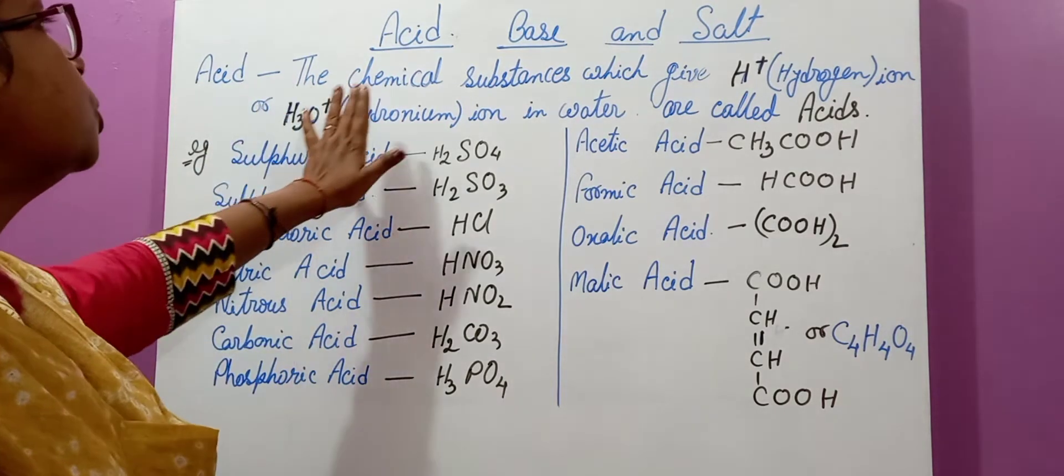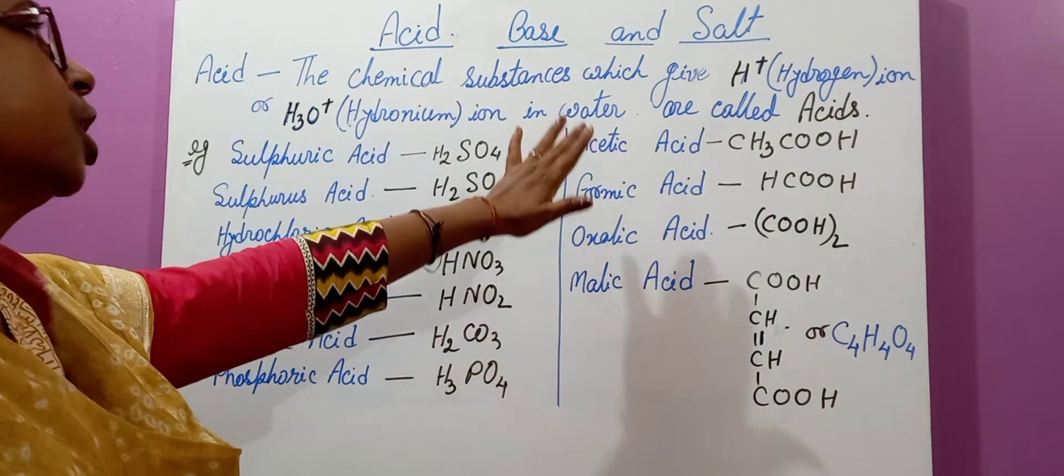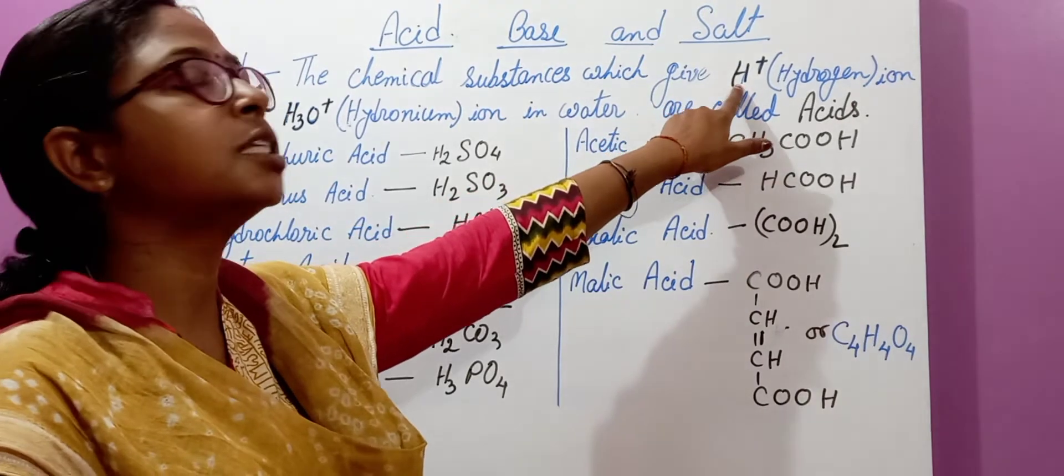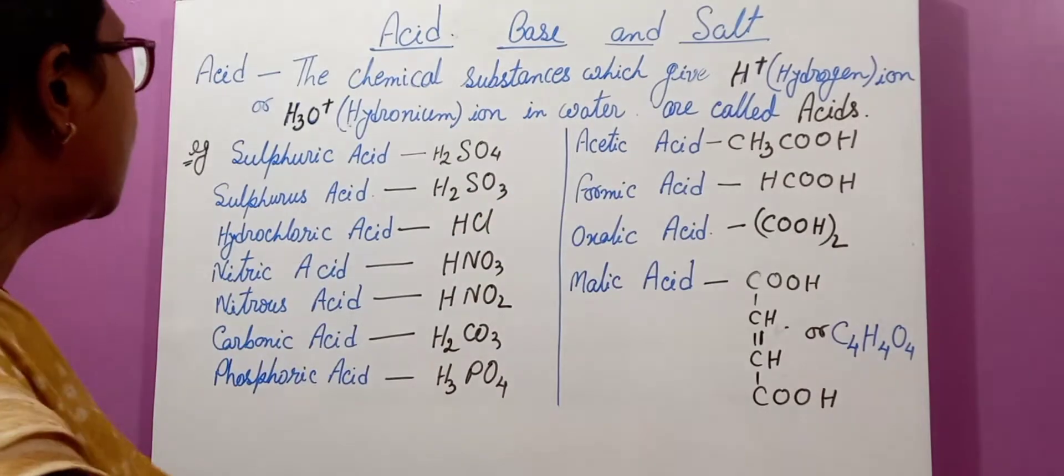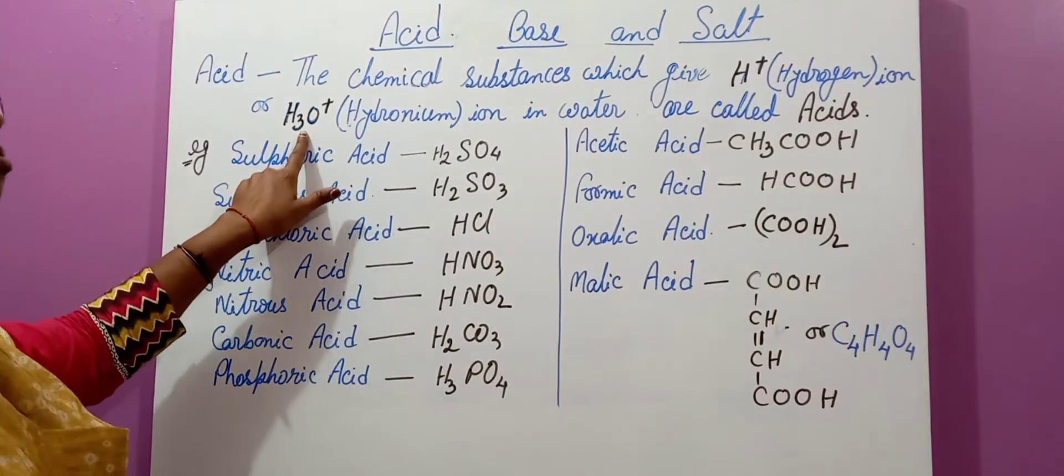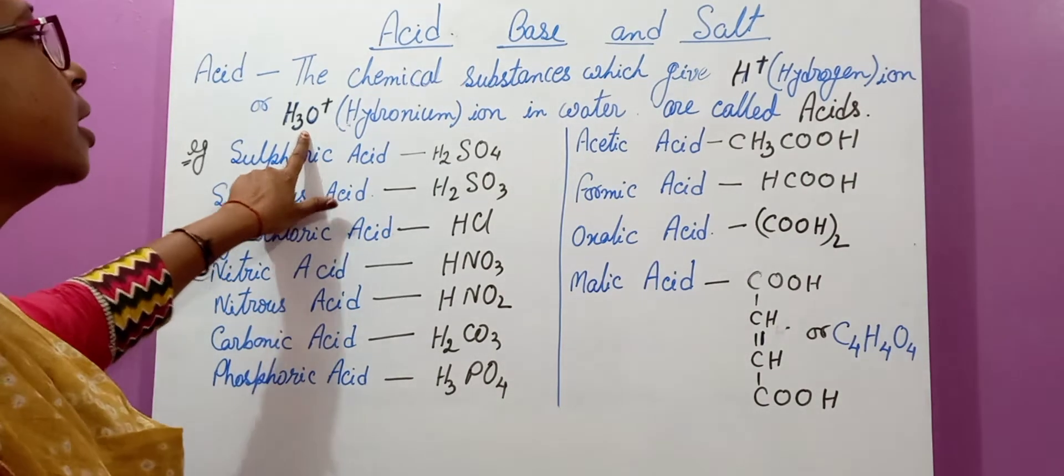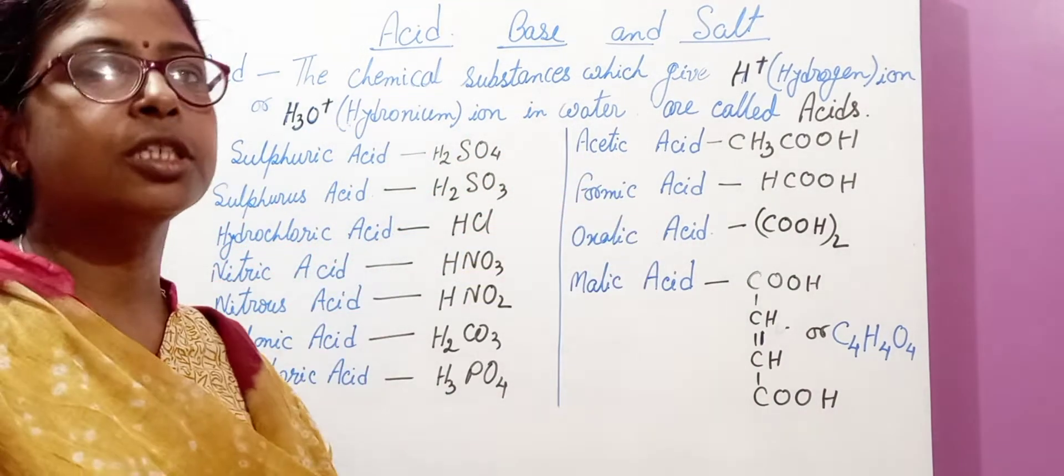Acids are those chemical substances which give hydrogen ion, means H+ ion, or hydronium ion, means H3O+ ion, in water. These are known as acids.